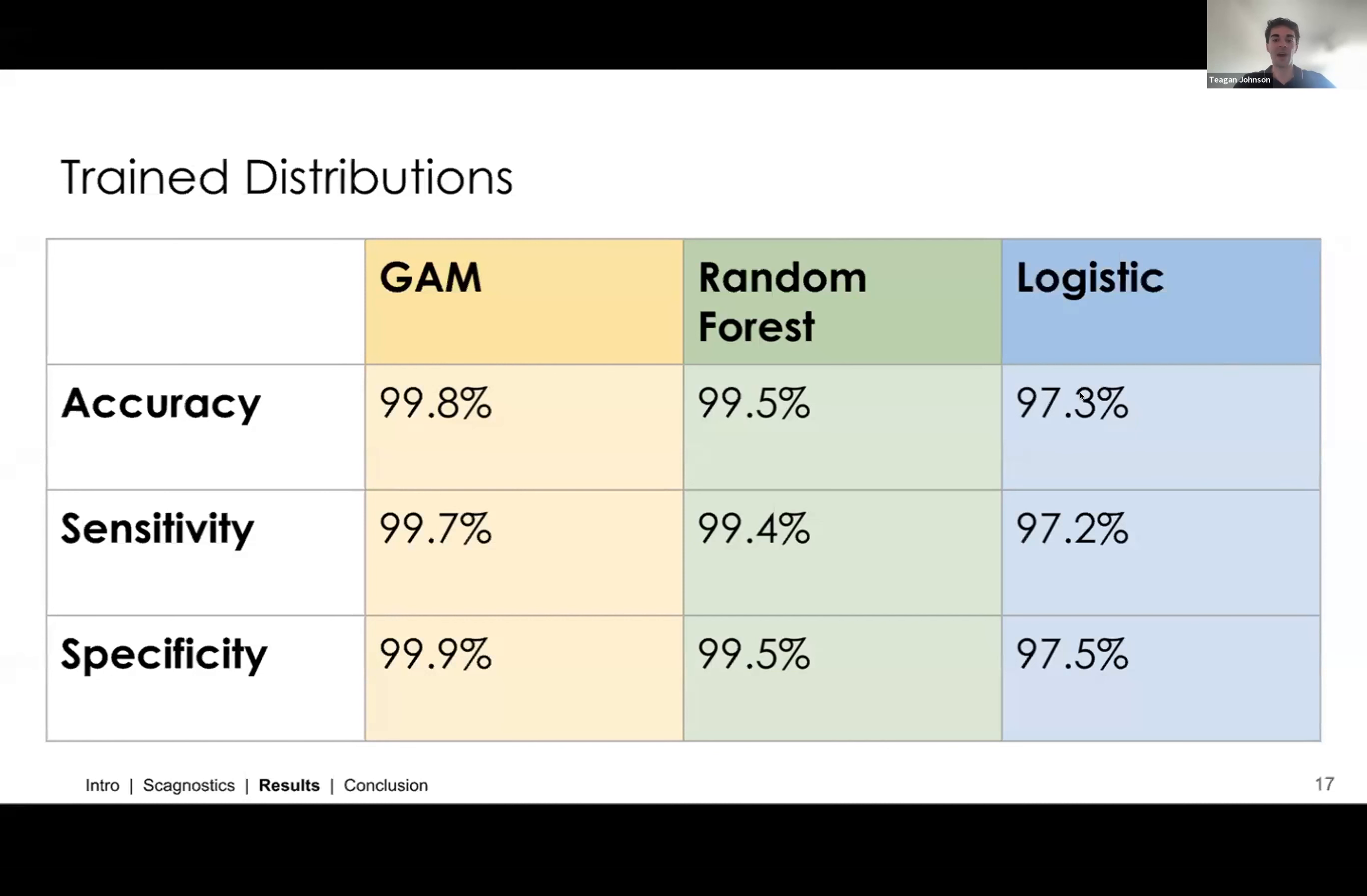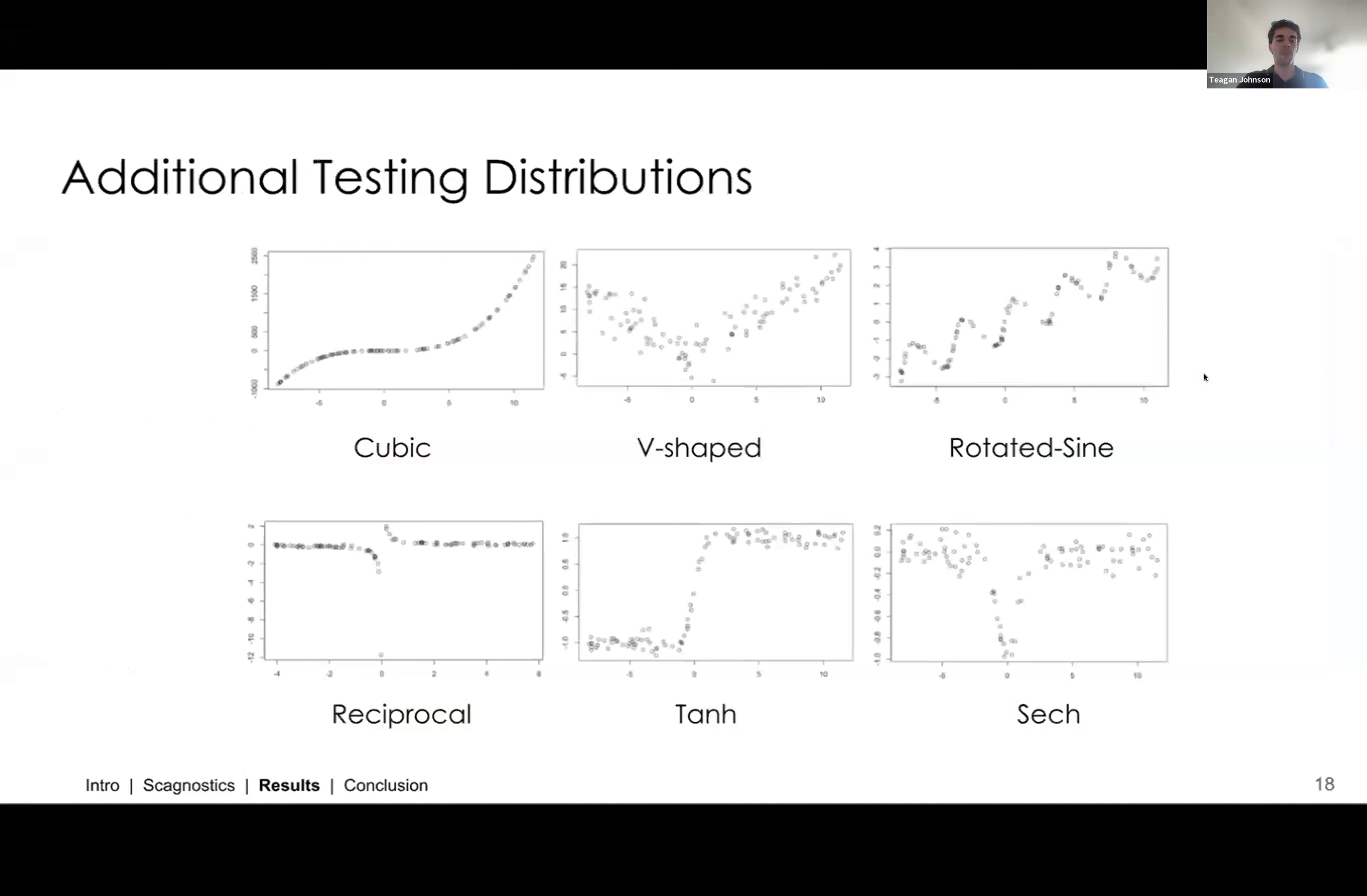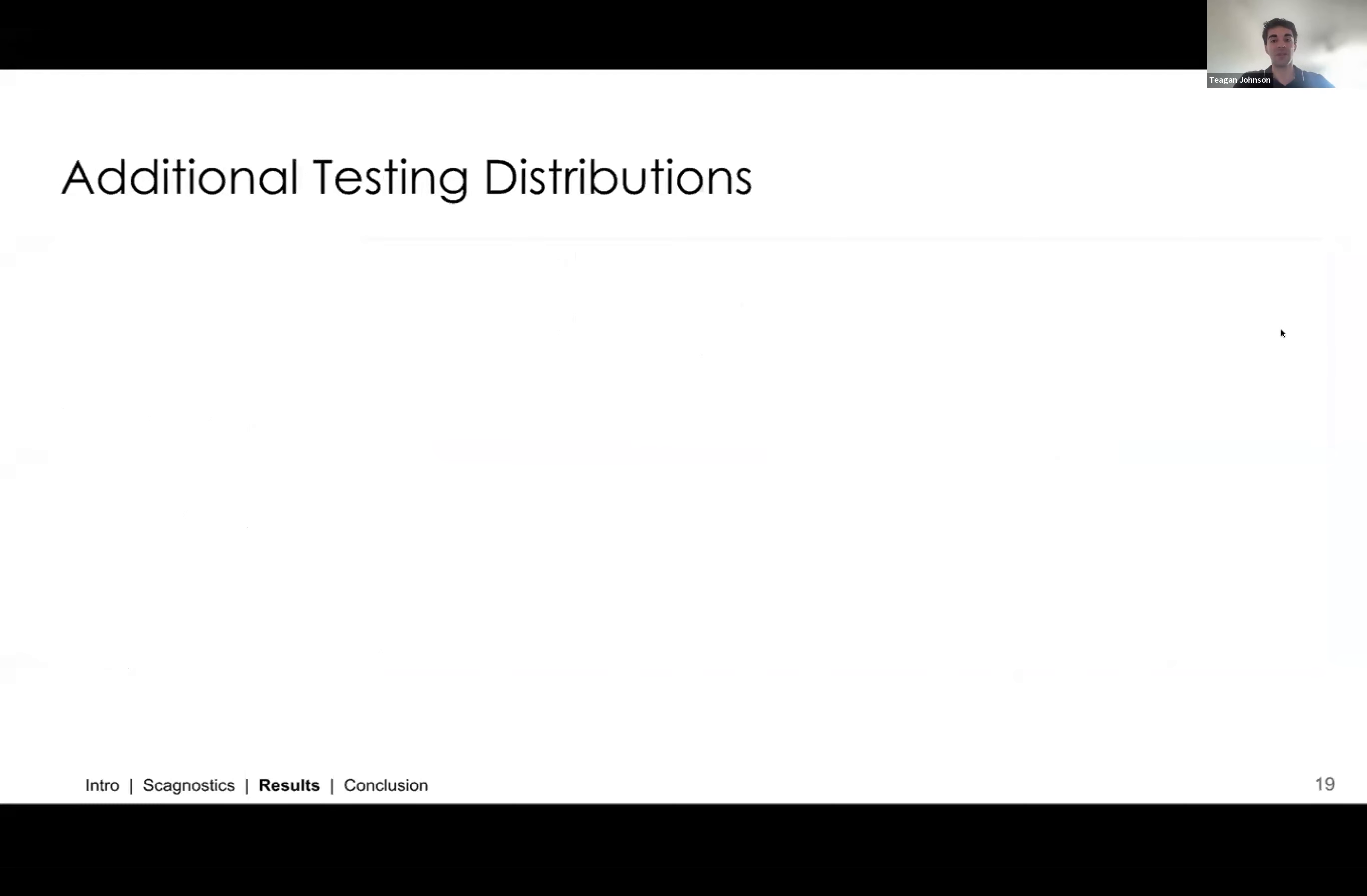So the GAM model was the highest, random forest was just behind, and then logistic also had metrics above 97%. So to go a step further, though, we wanted to see how well our models could perform if we introduced distributions that we didn't train these models on. So we added these six distributions, and we essentially just wanted to see if these models could perform well, even if they hadn't been trained on these distributions.